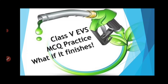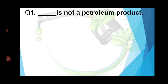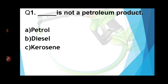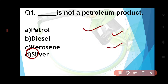Question number one: Dash is NOT a petroleum product. Options are petrol, diesel, kerosene, and silver. If you have studied this chapter, you know that petrol, diesel, and kerosene are all petroleum products. So silver is not a petroleum product — the answer is silver. Remember: petrol, diesel, kerosene are petroleum products, but silver and gold metals are not.